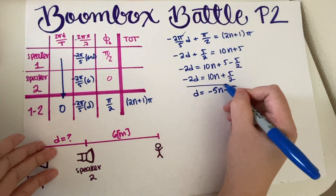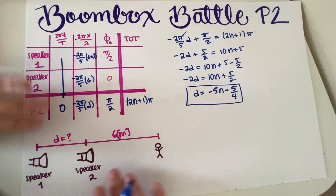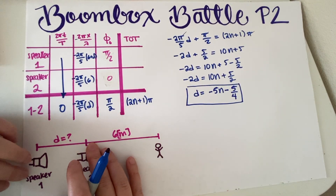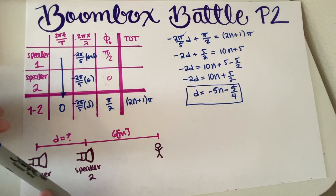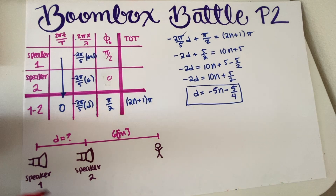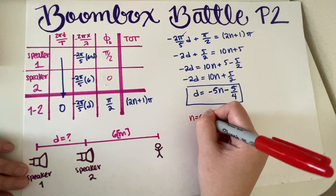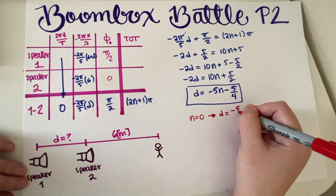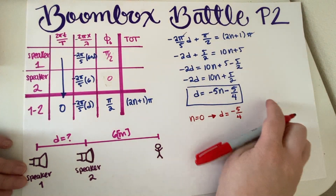After working through the algebra, I get a final equation for d that gives all possible distances between the speakers that result in the person hearing no sound. This is essentially the general answer. However, the problem only asks for one possible distance, so we substitute a value of n. If I substitute n = 0, I actually get a negative distance — negative 5/4 meters. There's nothing algebraically wrong with this; physically it just means Speaker 2 would be behind Speaker 1, with the setup flipped.